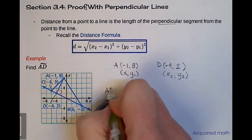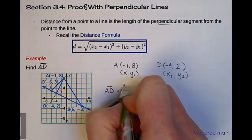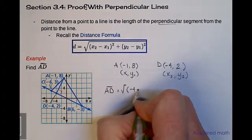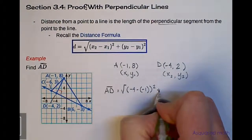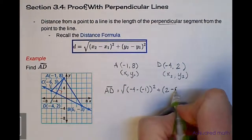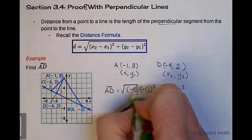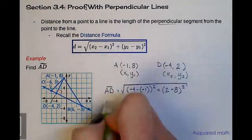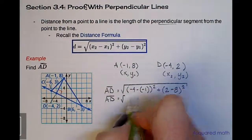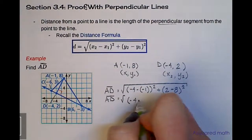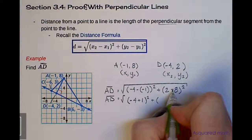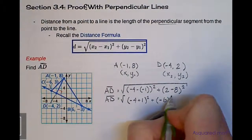So we will find that line segment AD equals the square root of (x2 minus x1) squared plus (y2 minus y1) squared. That's (−4 minus −1) quantity squared plus (2 minus 8) quantity squared, all under the square root. We know a negative times a negative gives us a positive, so we end up with (−4 + 1) quantity squared plus (−6) quantity squared under the square root.